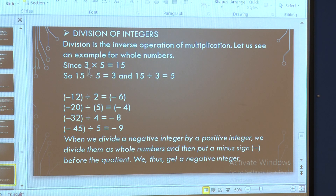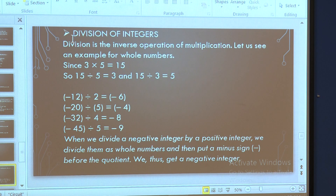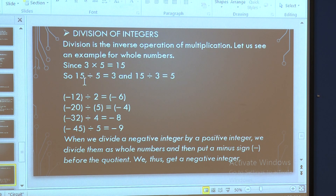You know whole numbers very well. Let me take an example: 3 multiplied by 5 is 15. To show that division is the inverse operation of multiplication: 15 divided by 5 is 3, and 15 divided by 3 is 5, because division is the inverse of multiplication.